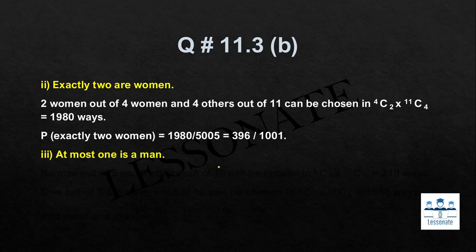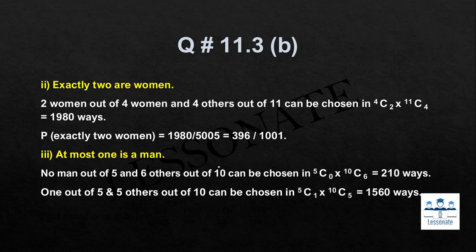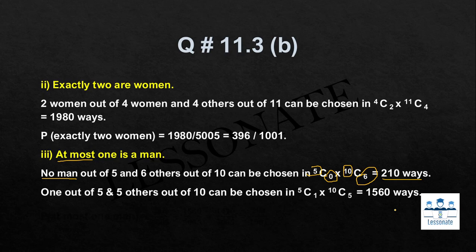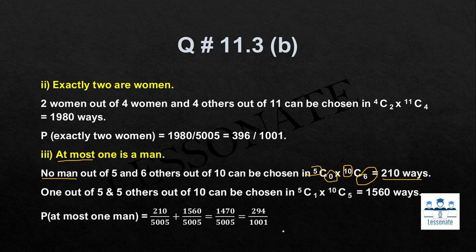Next part: at most one male. At most one means either no man is chosen or exactly one man is chosen. For no man: C(5,0) × C(10,6) = 1 × 210 = 210 combinations. For one man: C(5,1) × C(10,5) = 5 × 252 = 1260 combinations. Total favorable = 210 + 1260 = 1470. The probability is 1470/5005, which simplifies to 294/1001.